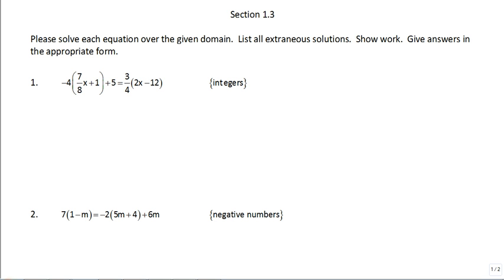So, for number one, we're just going to start out by solving, and then we'll talk about the fact that we are only going to solve with respect to integers. First step, you would obviously distribute your negative 4, and that would give you negative 7 halves x minus 4 plus 5 is equal to, distribute your 3 fourths, and that would give you 3 halves x minus 9.